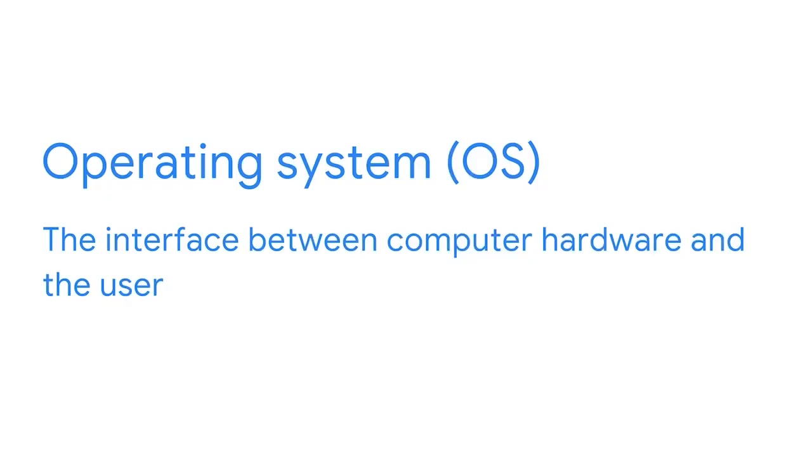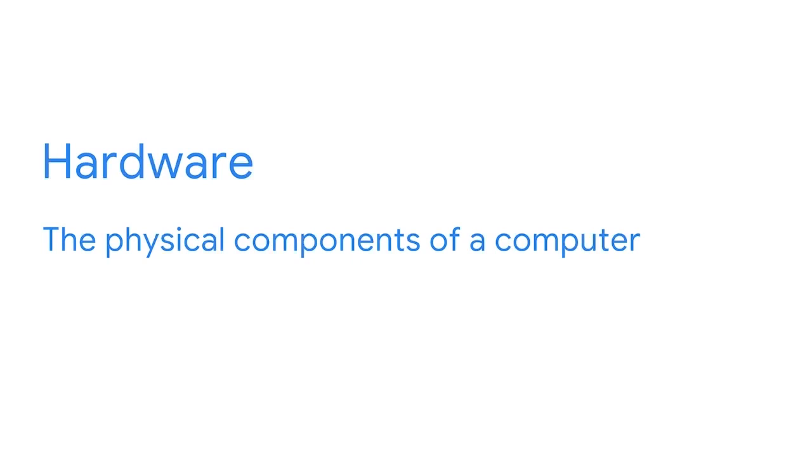So what exactly is an operating system? It's the interface between the computer hardware and the user. The operating system, or the OS as it's commonly called, is responsible for making the computer run as efficiently as possible, while also making it easy to use. Hardware refers to the physical components of a computer.